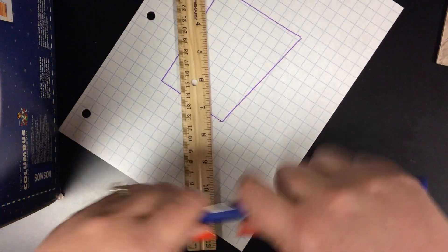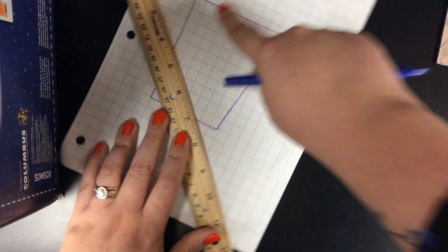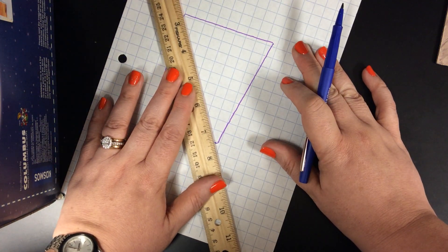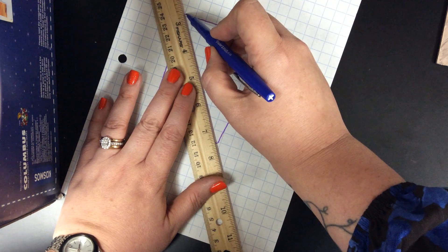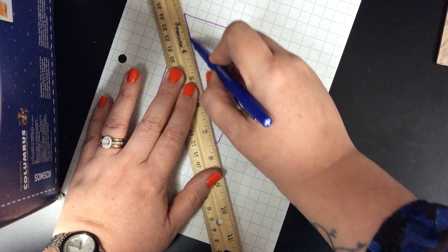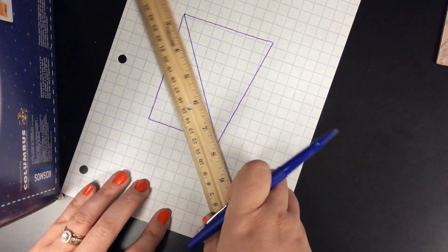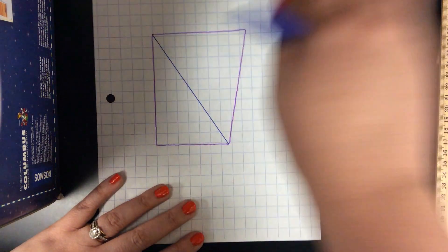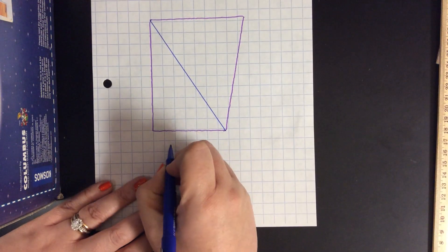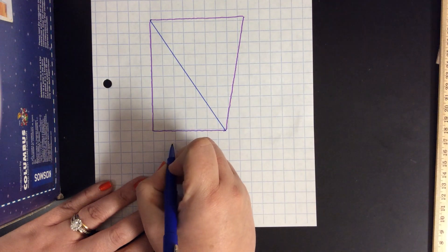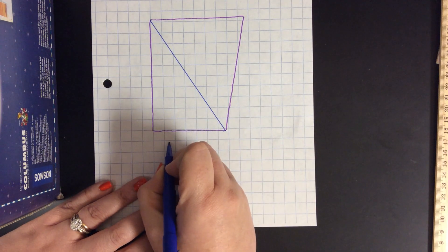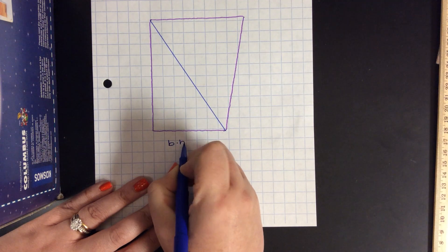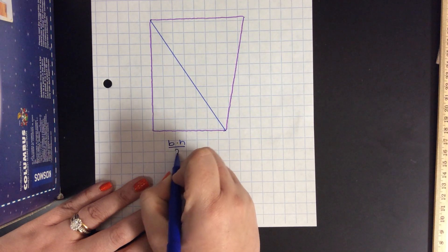I can take my pen and I can just draw a line from corner to corner like so, and now I have two triangles. Now I can find the area of any triangle. It's going to be base times height divided by two.